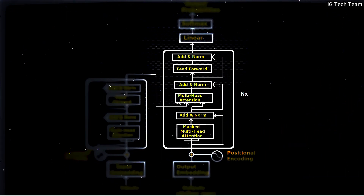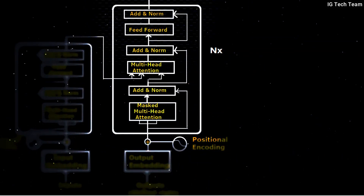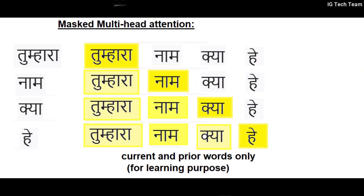Next we have the decoder. In the decoder, the embedding vector plus positional encoding vector of the targeted output gets passed and processed. Two of the layers are the same as the encoder. In the decoder we have an extra masked multi-head attention layer. The masked attention block doesn't compute attention vectors for all words in a sentence — it only computes attention vectors for current and prior words. This is because we want our network to learn, and if it already knows the next word there is no sense for learning to take place. We want it to predict the next word using previous words, then compare the predicted word with the actual word and update its weight values. Thus we have masked input in the decoder.